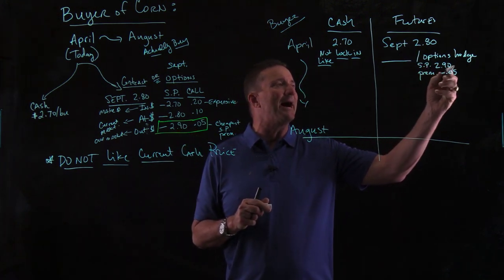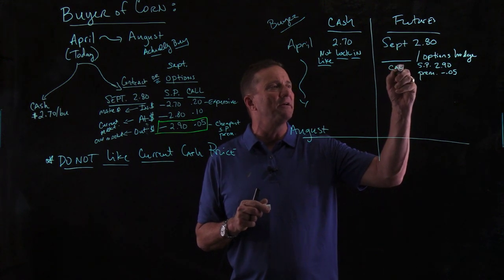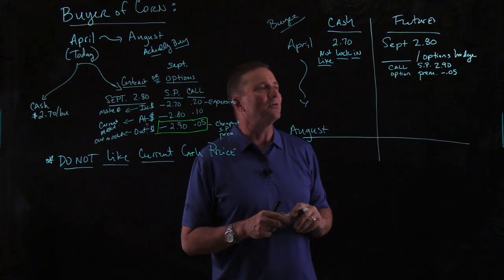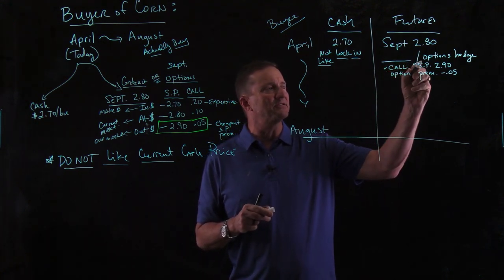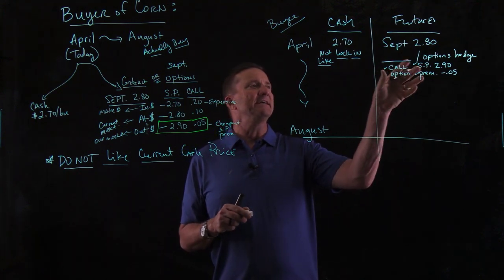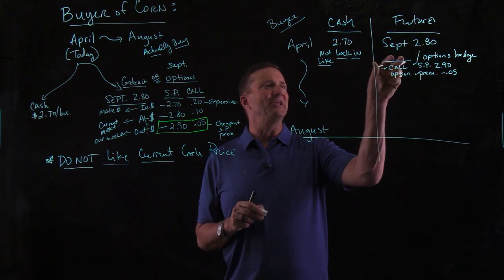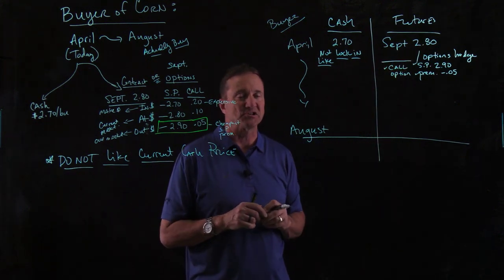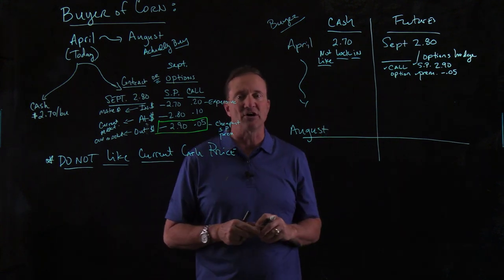So my strike price is $2.90, so I have the right to buy at $2.90. Let's go ahead and put in that we're talking about a call option. I'm looking at a call option, the strike price of $2.90, and I need a premium. That's the information I need in the futures market if I'm going to do an options hedge. And I'm going to leave the futures position blank because we did not take a position — we want to see what happens in August.